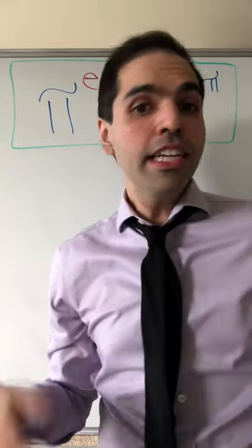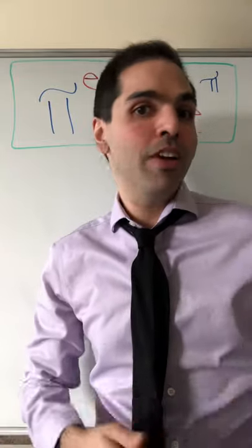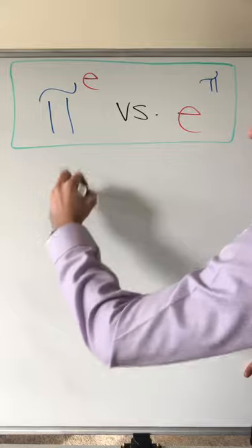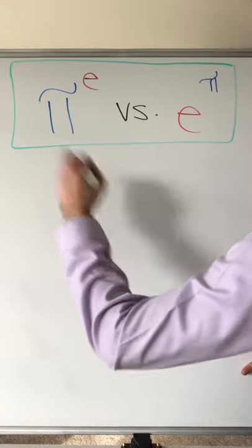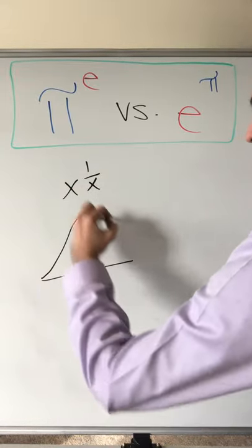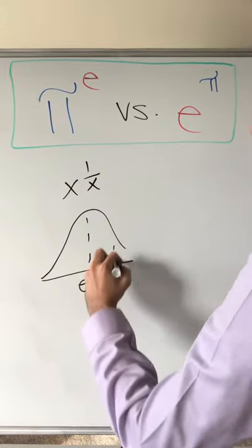Pi to the e or e to the pi — which one is bigger and why? Consider x to the 1 over x. Mad respects. This has a maximum at e, I can guarantee.